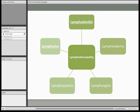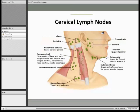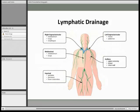There are about 60 to 70 lymph nodes in the head and neck region, divided into 11 groups. The lymphatics of the right side of the head and neck drain into the right subclavian vein via the right lymphatic duct. The lymphatics of the left side drain into the left subclavian vein via the thoracic duct.